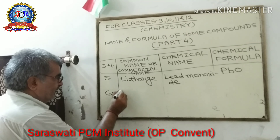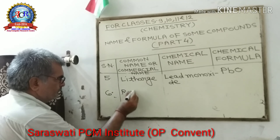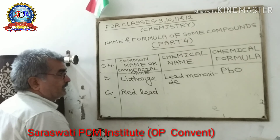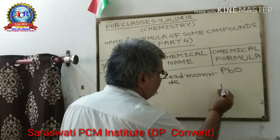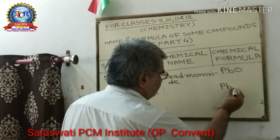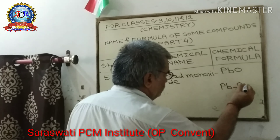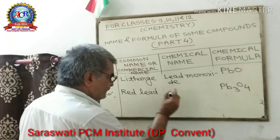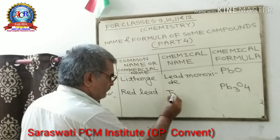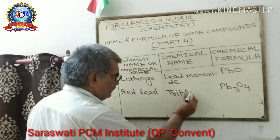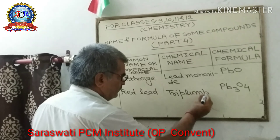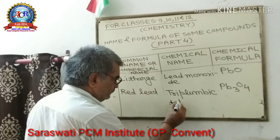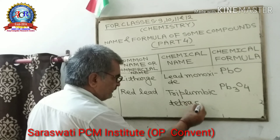Sixth: Red Lead. Its formula is Pb₃O₄. Its chemical name is Tri-plumbic Tetroxide.